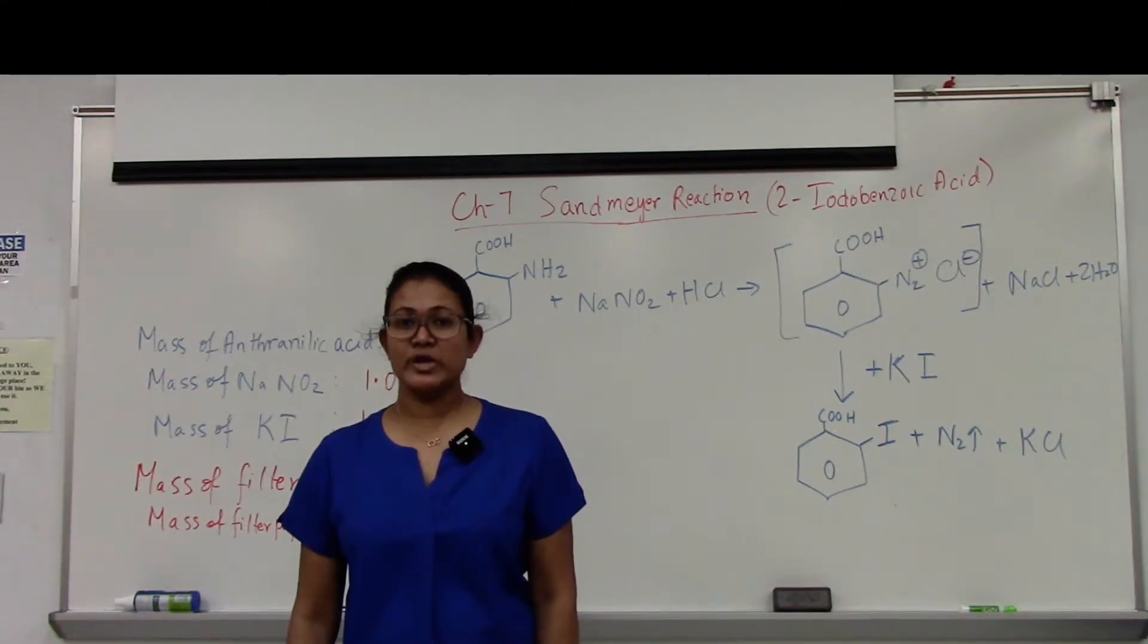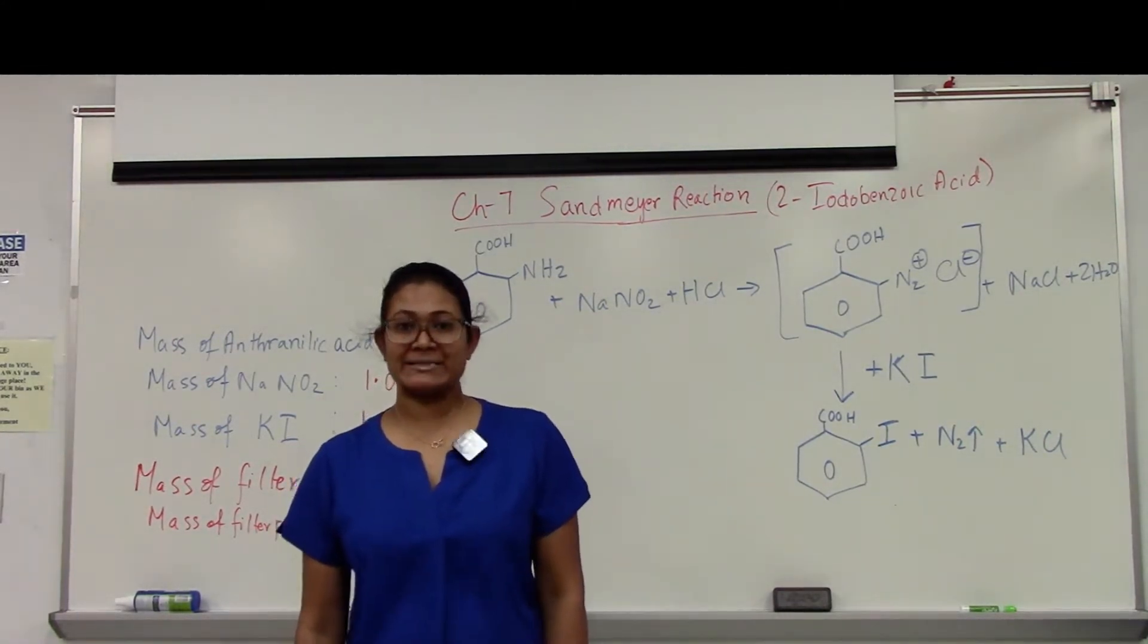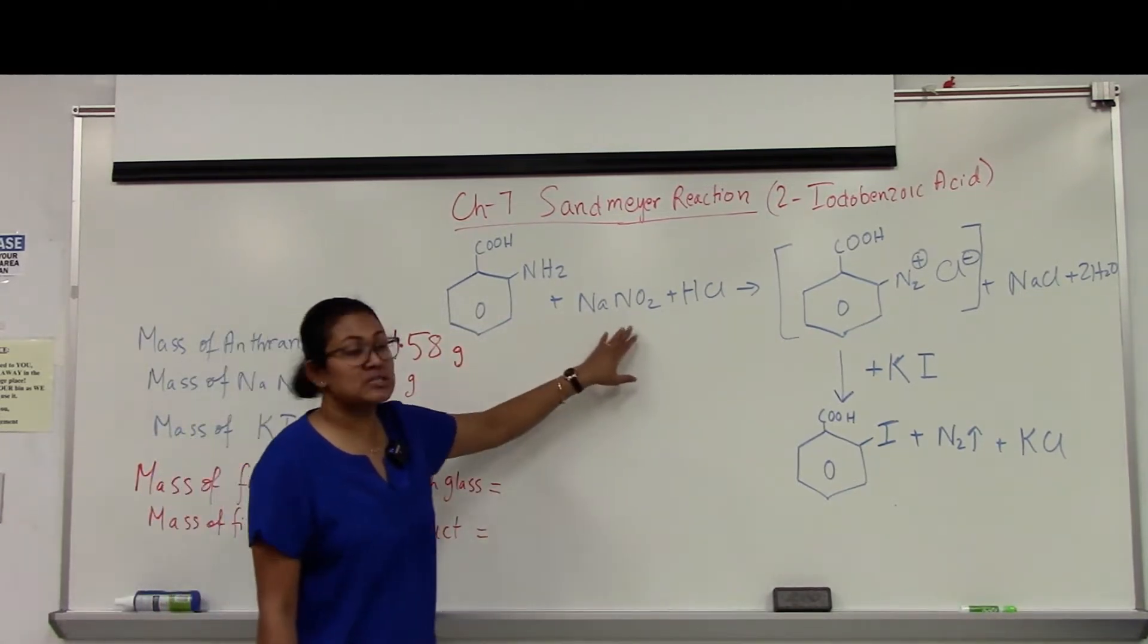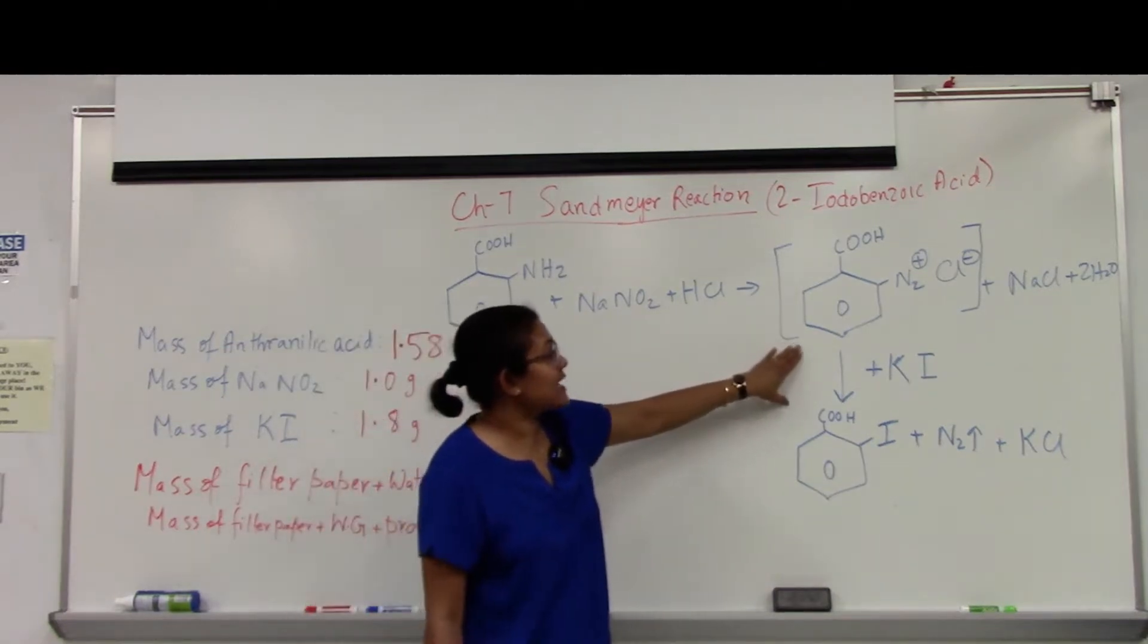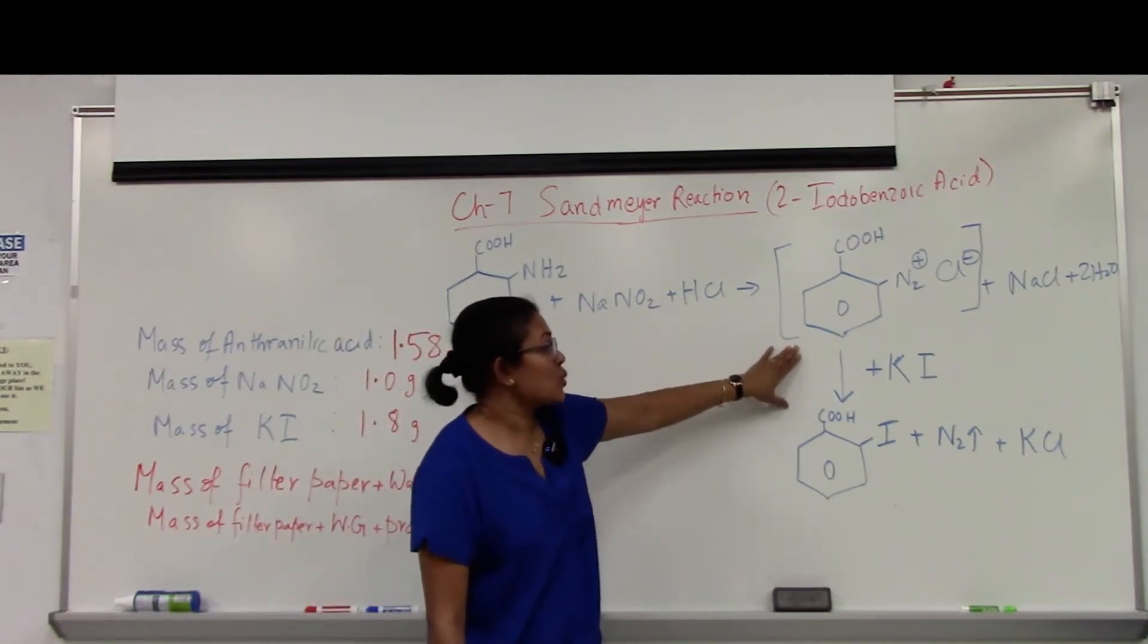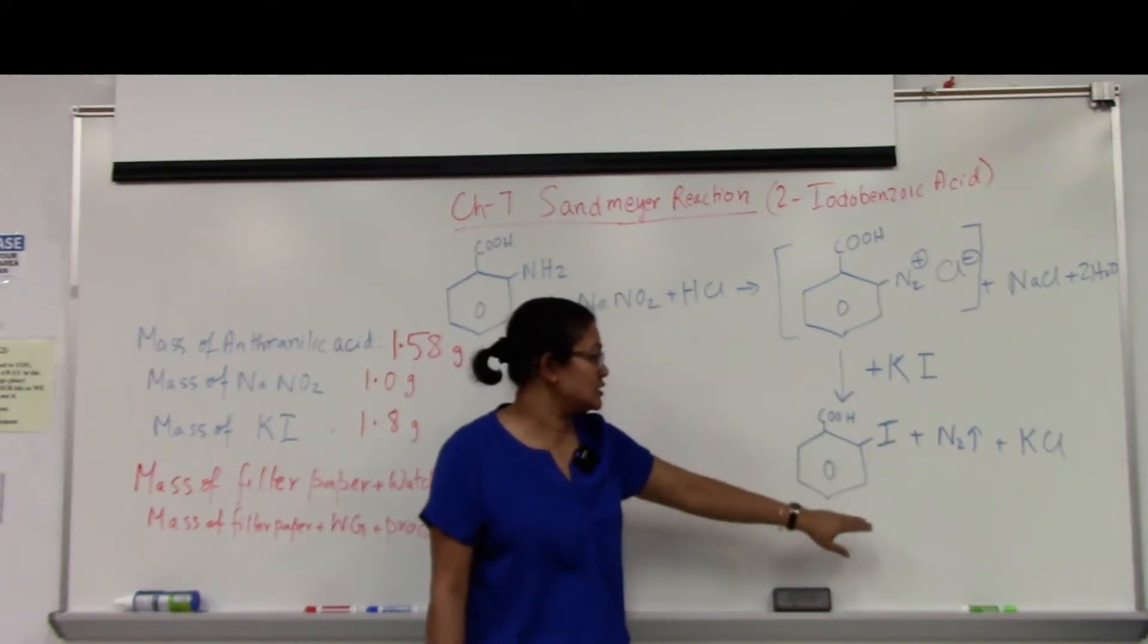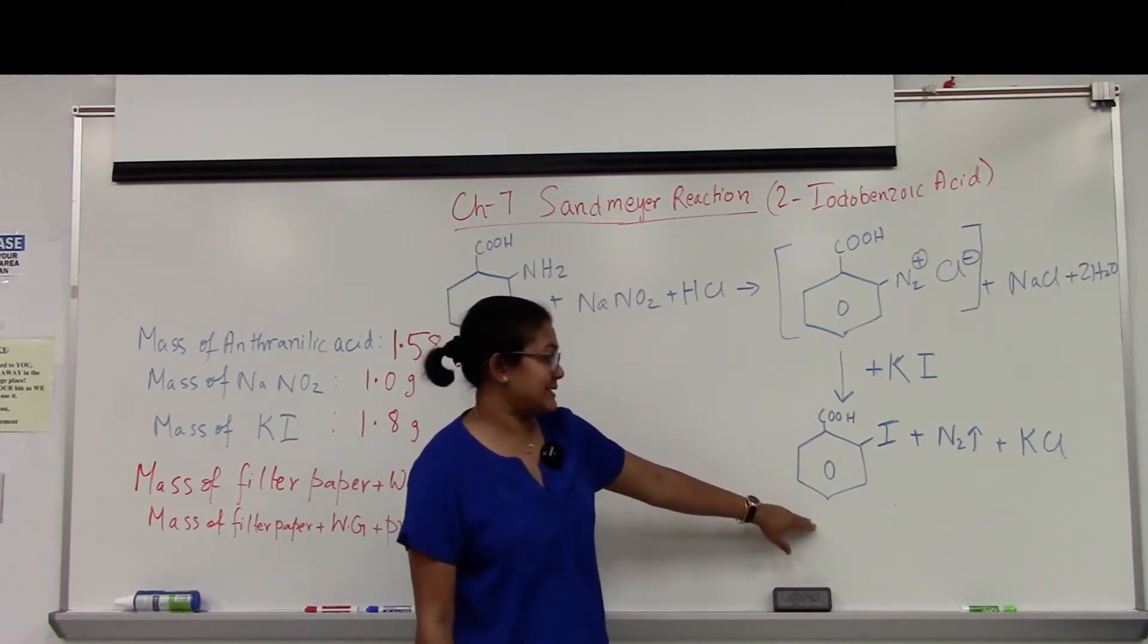Hello everyone, today we are working on Sandmeyer's reaction and we are going to make 2-iodobenzoic acid. We start with anthranillic acid reacted with sodium nitrite and HCl to get the diazonium salt, and once the diazonium salt is formed we add potassium iodide solution to get our desired product which is 2-iodobenzoic acid.